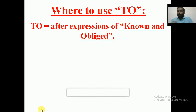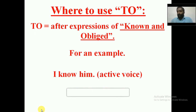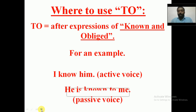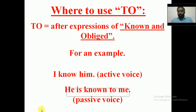Now we use the word 'to'. 'To' is used after expressions of known and obliged. For example: 'I know him.' That is active voice. When converting into passive voice, we do not use 'by'. Instead of 'by', we use 'to'. So it becomes: 'He is known to me.' — not 'by me', but 'to me'. So 'to' is used after expressions of known and obliged.